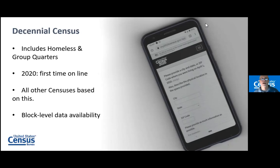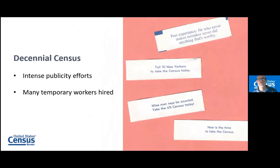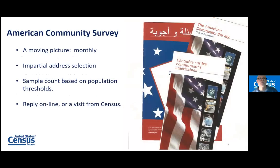The data is available down to a block level, and much of that is because of redistricting. That redistricting data this census will be late — I believe it will be the end of September when it is released to the public. The portal we're going to look at today is the same place people will go to find that redistricting information down to the block level. This decennial census had a lot of intense publicity surrounding it and a lot of temporary workers who understood what they were doing in their lane, but not necessarily the bigger picture.